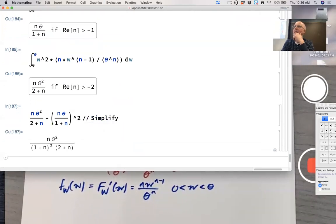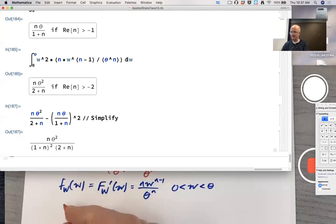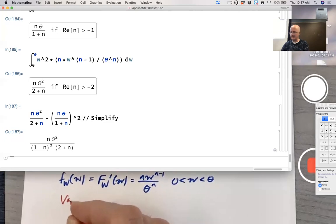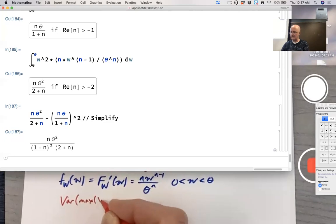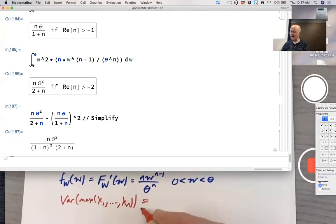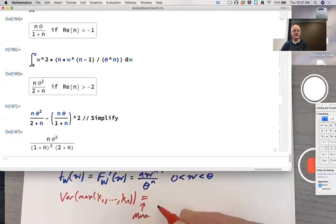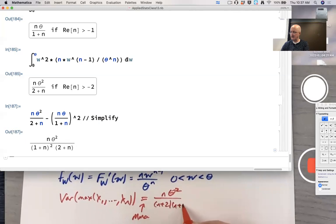There's the variance of the maximum. With Mathematica we've figured it out to be n theta squared divided by n plus 2 times n plus 1 quantity squared.